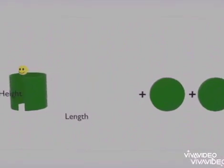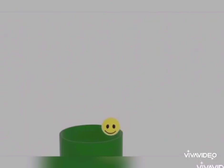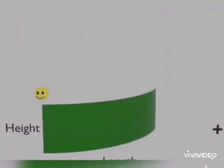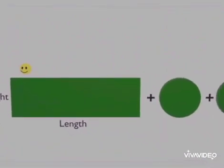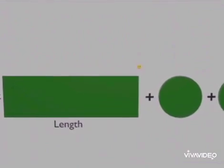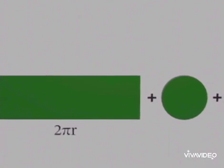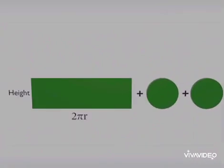If we fold this rectangle back, we can easily see that the length of this rectangle is the circumference of a circle. As we know, the circumference of a circle is 2πr, so the length of this rectangle is 2πr, and the breadth of this rectangle is the height of the cylinder.